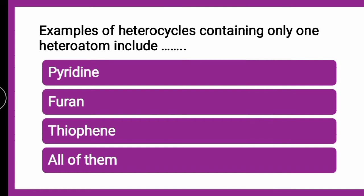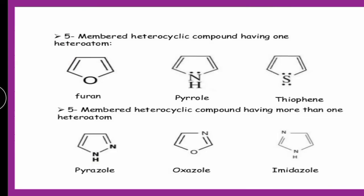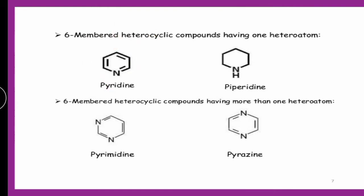The examples of heterocycles which contain only one heteroatom — here no specification is made whether they are 5-membered, 6-membered, or fused. The examples are pyridine, furan, thiophene — or all of them. The answer is all of them. Furan contains oxygen, thiophene contains sulfur, and pyridine is a 6-membered heterocyclic compound which contains only one heteroatom. So all of these contain one heteroatom.